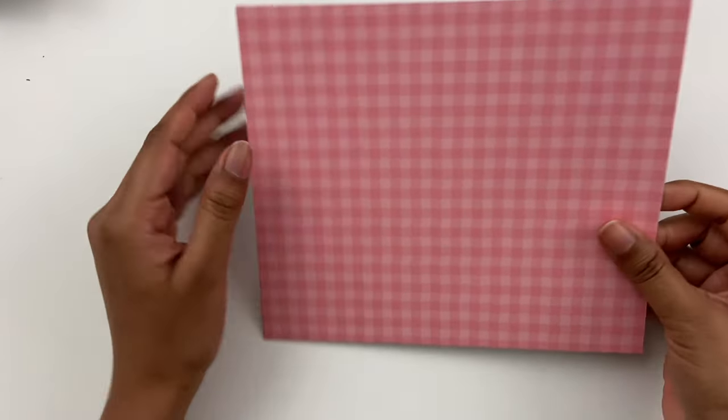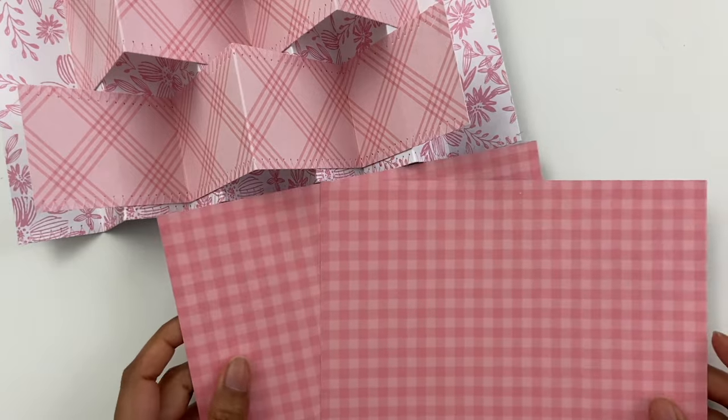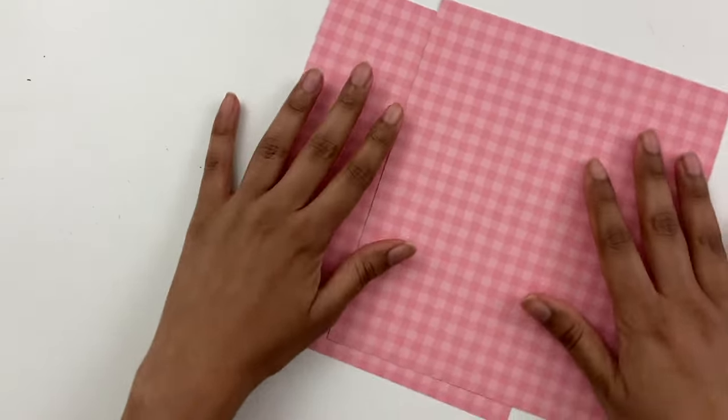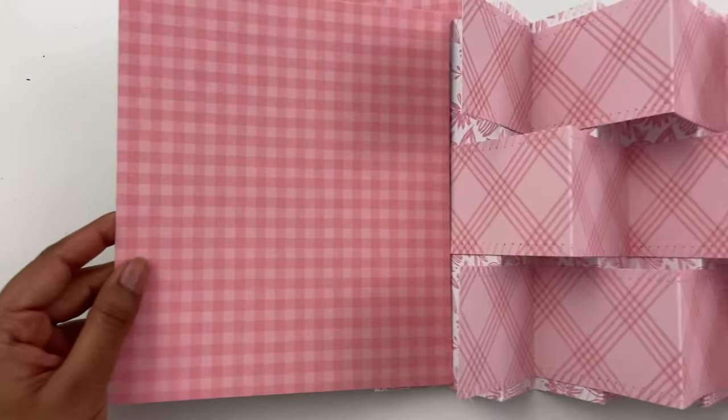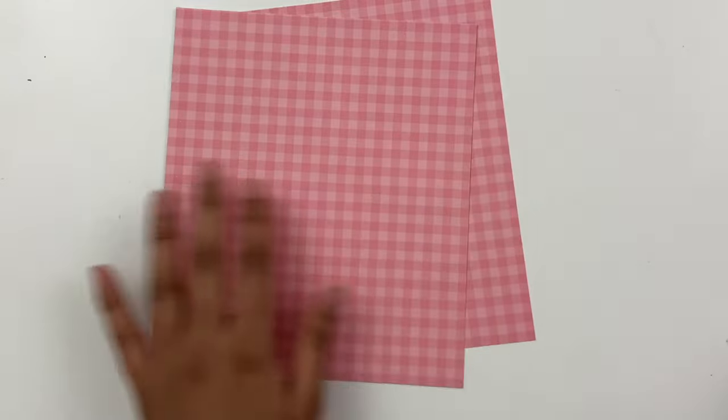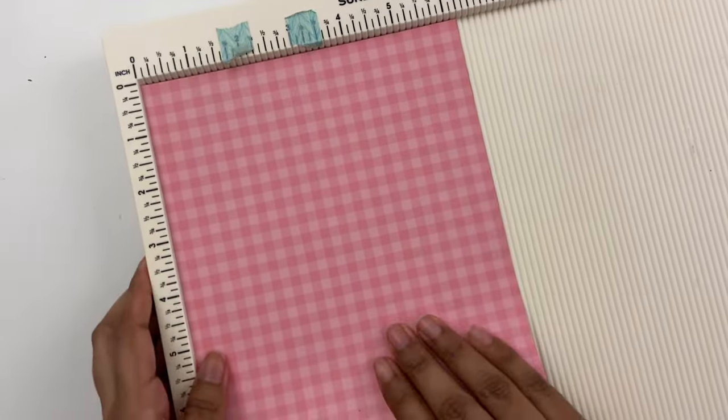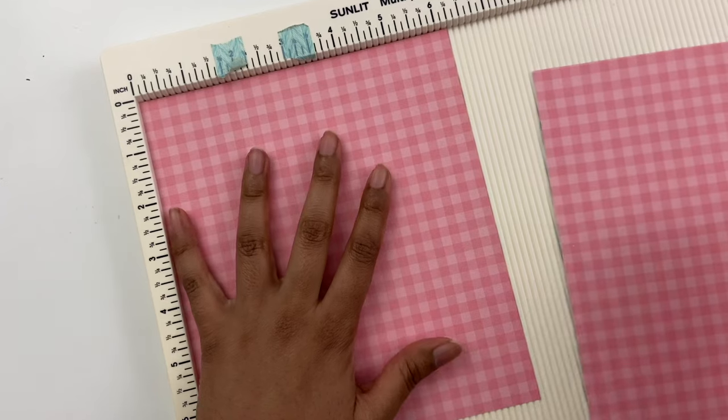So we have two sheets, 6 and 1/4 by 7 and 1/4. And then now we need to score both of these in half along the 6 and 1/4 side. So these are going to just go over our cover like this. So we just need to score at 3 and 1/8 inch.